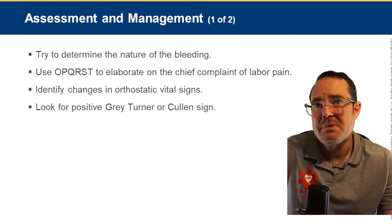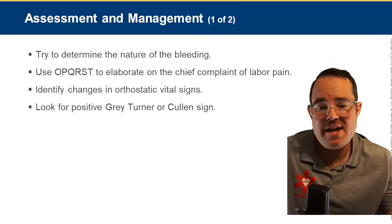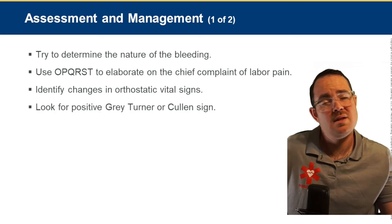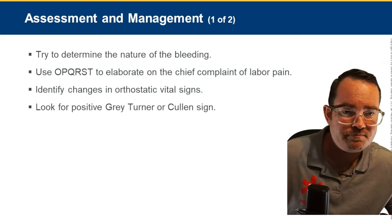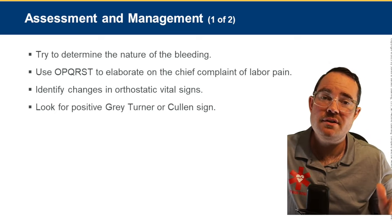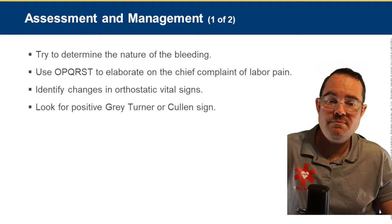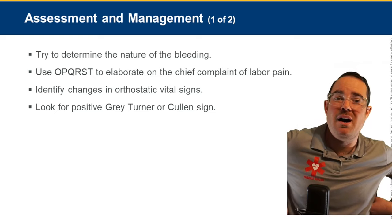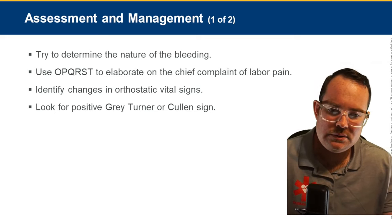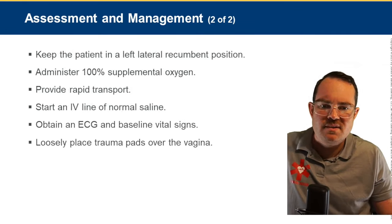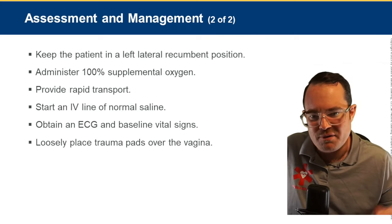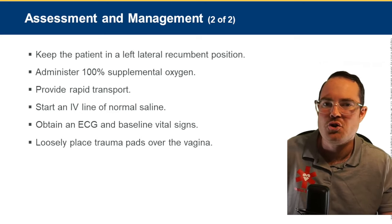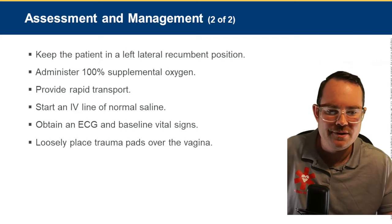Treatment for third trimester bleeding: keep the patient left lateral recumbent, rapid transport, administer oxygen, establish IV with saline. Loosely place trauma pads over the vagina — do not insert anything inside — just place them on the outside to collect blood. That is all we do in the field.